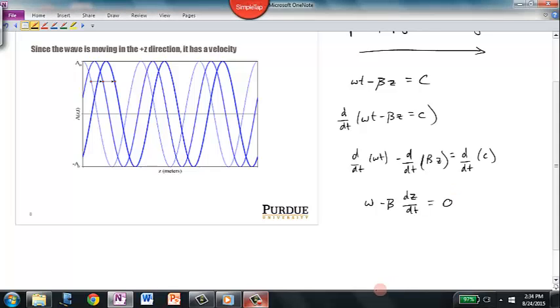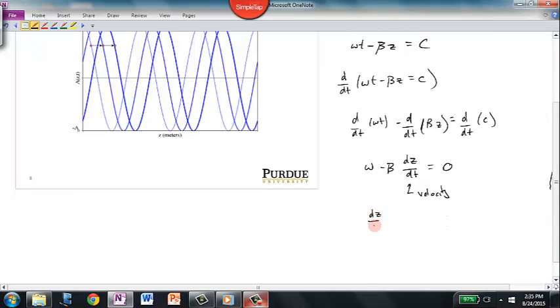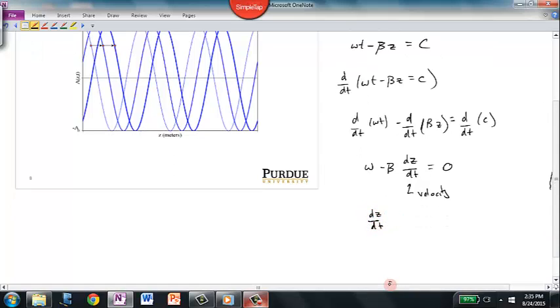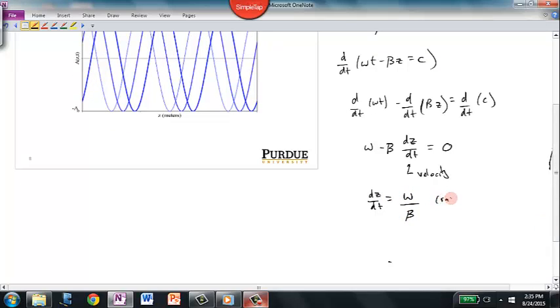So we see that here we've got angular frequency. Here we've got wave number. That's rate of change of position with respect to time. So that is velocity. And so we can rearrange this and we can say dz dt is equal to omega over beta. And that's in radians per second. And that is phase velocity, or propagation velocity of mu sub p.